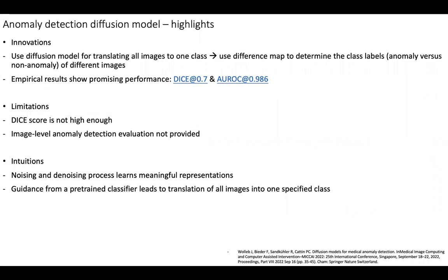problem as a binary classification problem, and this diffusion model will translate all the input images into one class. And then calculate the difference map between the translated image and original input image to determine whether the input image has an anomaly region. The empirical results show promising performance, achieving a DICE score of 0.7 and area under the ROC curve of 0.986.